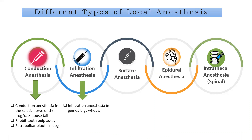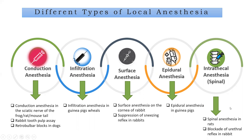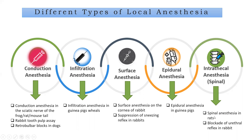For infiltration anesthesia, you have infiltration anesthesia in guinea pig wheals. Then there is surface anesthesia — surface anesthesia on the cornea of the rabbit and suppression of sneezing reflex in rabbit. Epidural anesthesia can be studied in guinea pigs, and lastly there is intrathecal or spinal anesthesia, studied using spinal anesthesia in rats and blockage of urethral reflex in rabbit. Out of these, we will discuss two important preclinical methods.